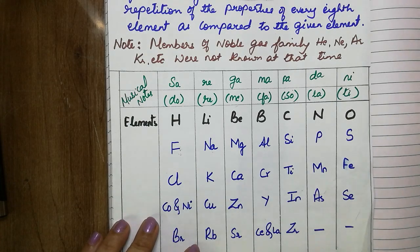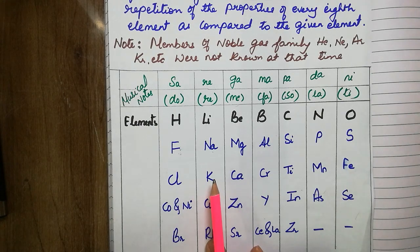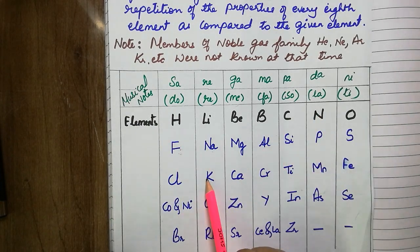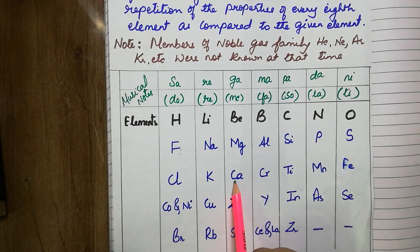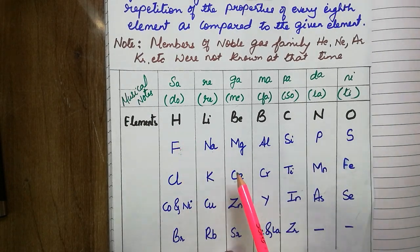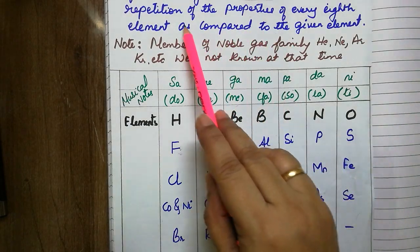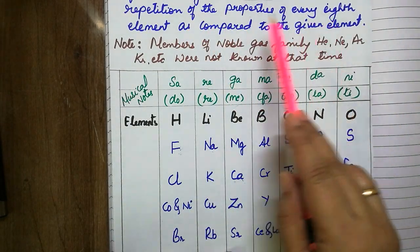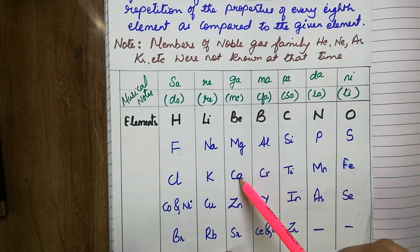Now coming to the limitations, which is the most important for your exam. The first limitation: the periodic classification according to him was only successful up to calcium. That means whatever he proposed, that the repetition of properties of every 8th element as compared to the given element, was successful only up to calcium.